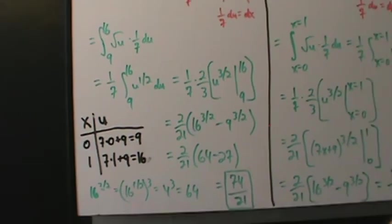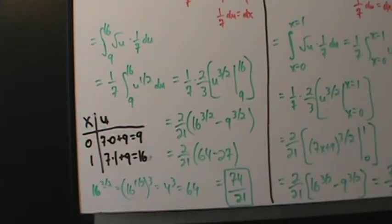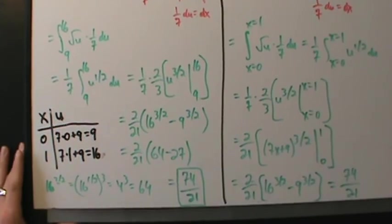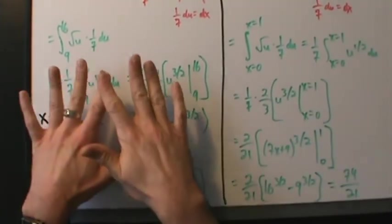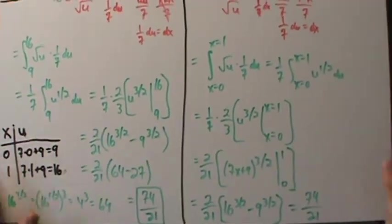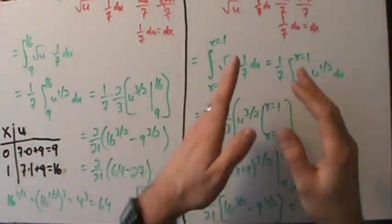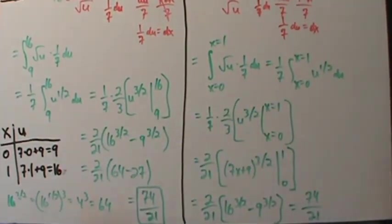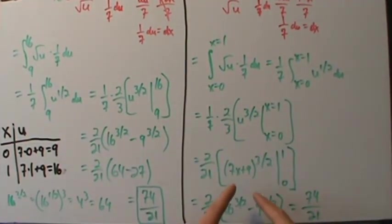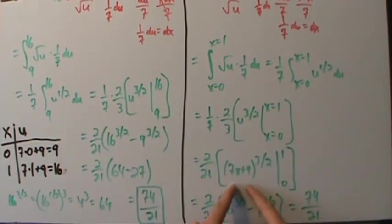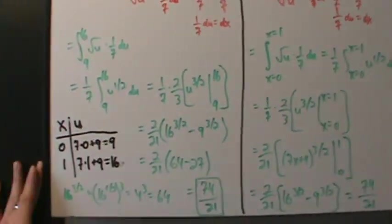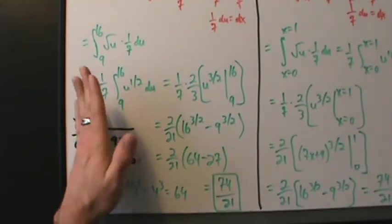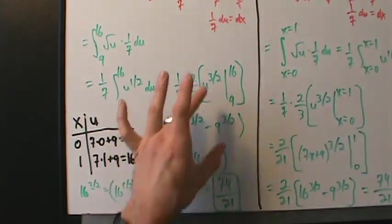If you have a choice — and it depends on your instructor — I think this way is much better because you don't have two variables flying around everywhere, you don't have to back-substitute, and you can get the limit conversion out of the way upfront so what you end up with is simpler to work with.